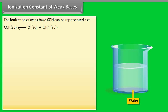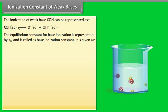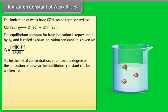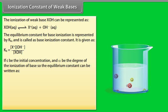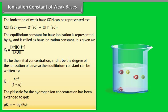Ionization constant of weak bases: The ionization of a weak base XOH can be represented in equilibrium form. The equilibrium constant is represented by Kb, called the base ionization constant. If C is the initial concentration and alpha is the degree of ionization, then Kb = Cα² / (1 − α).